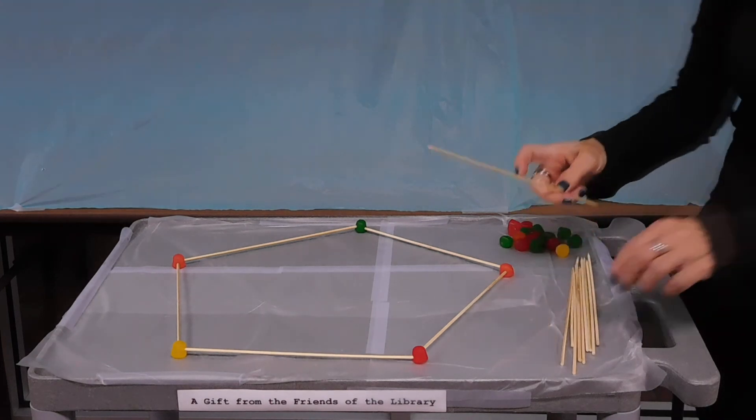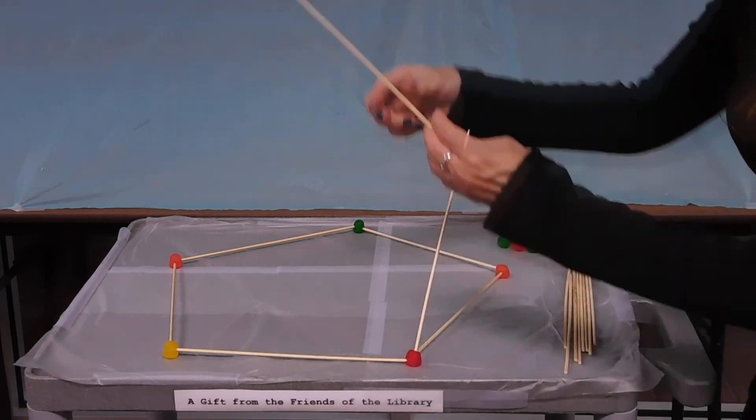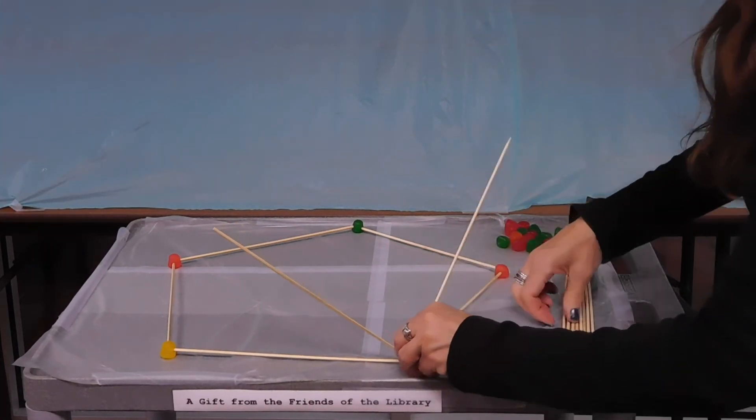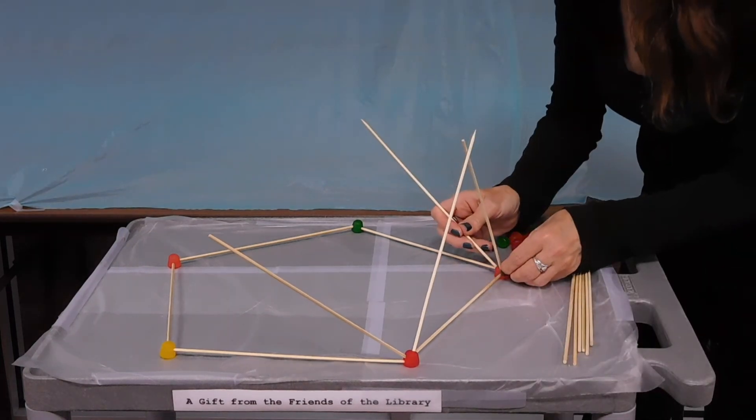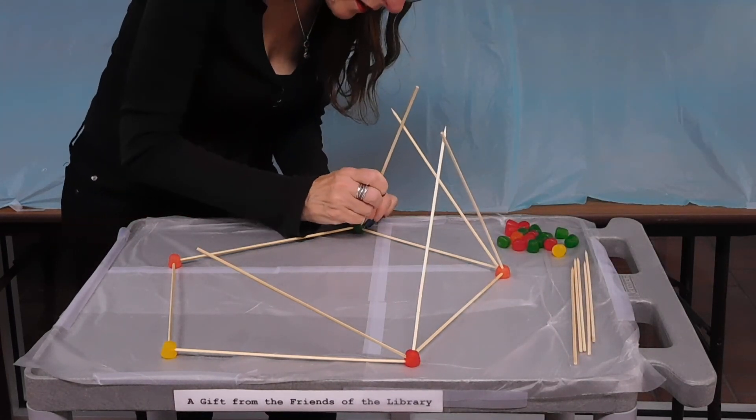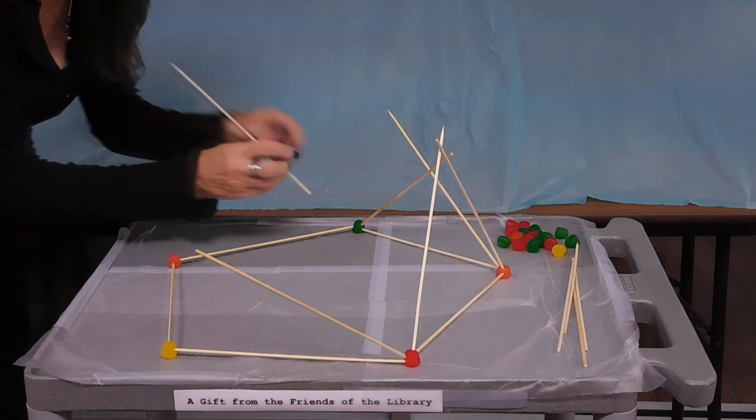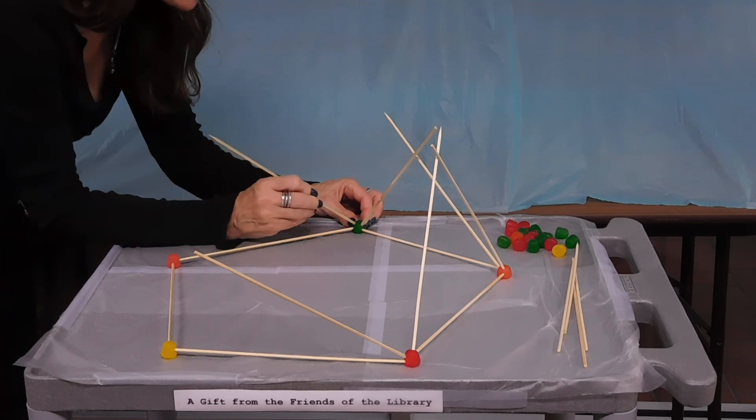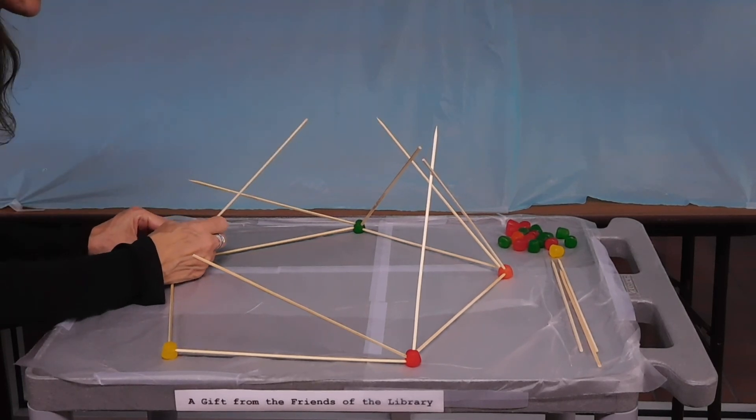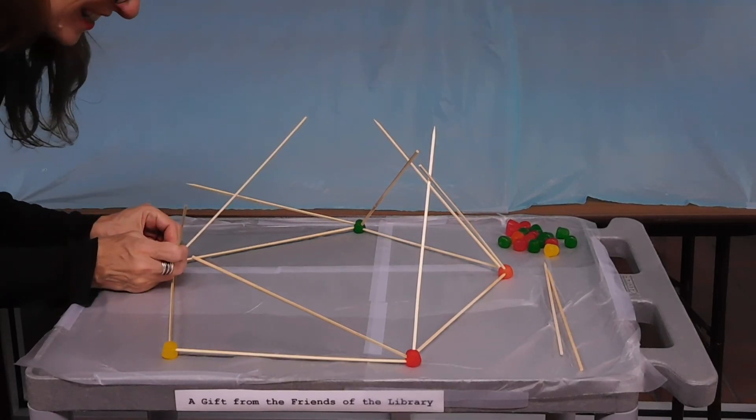Now the next step is to take two more skewers and put them in each gumdrop. And I need to be a little more careful with my placement of the skewers into the gumdrops than I needed to be with the toothpicks, because the skewers are bulkier than the toothpicks. So there's not as much room in there for them.